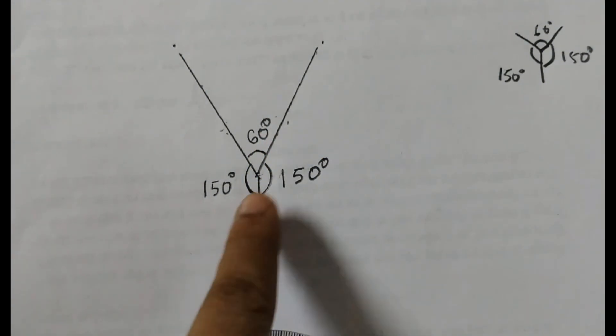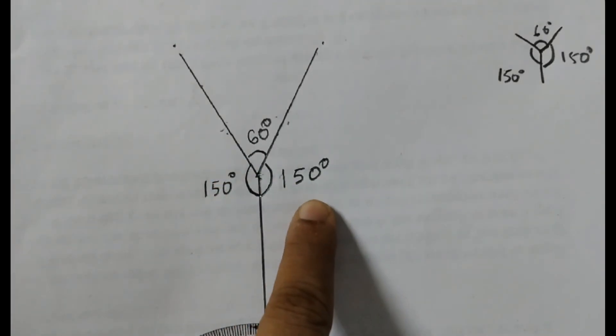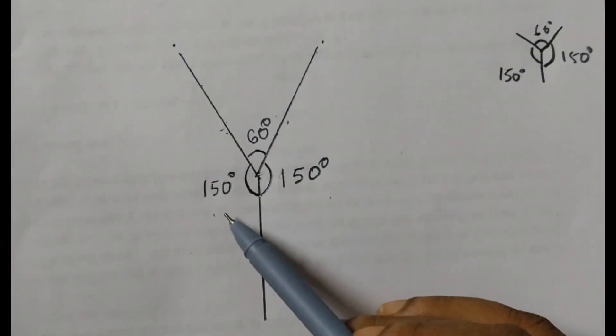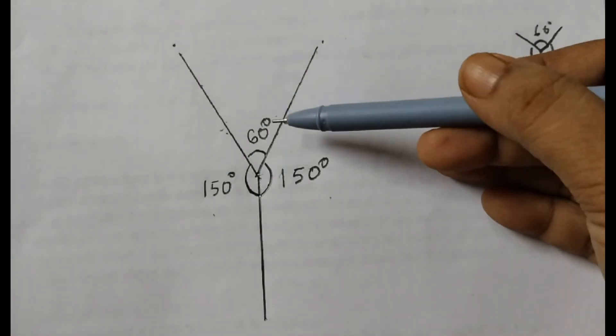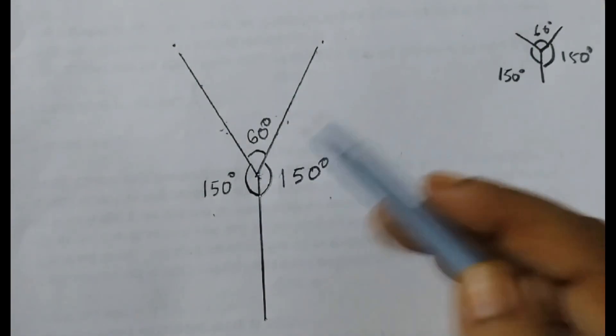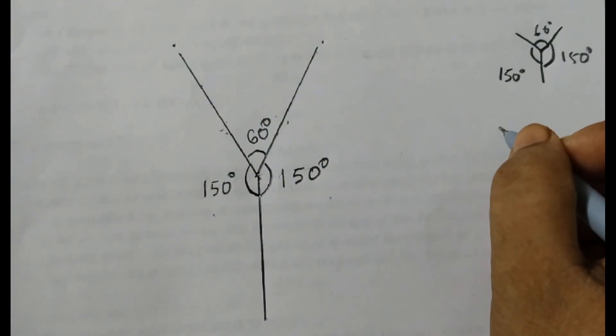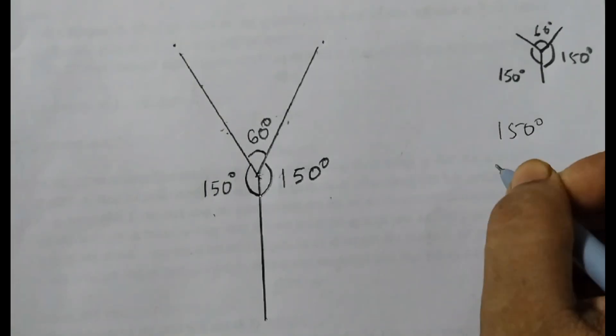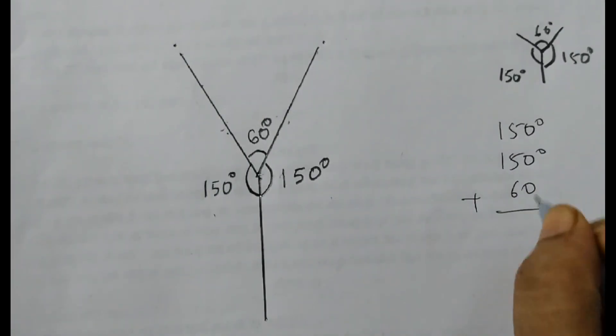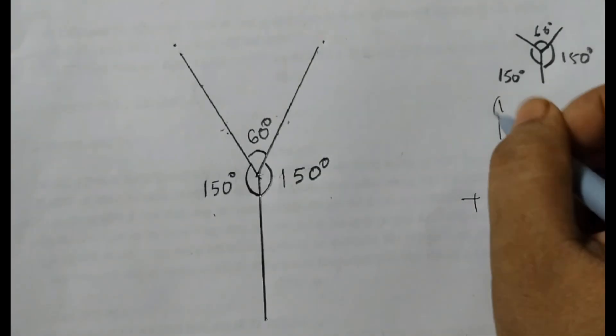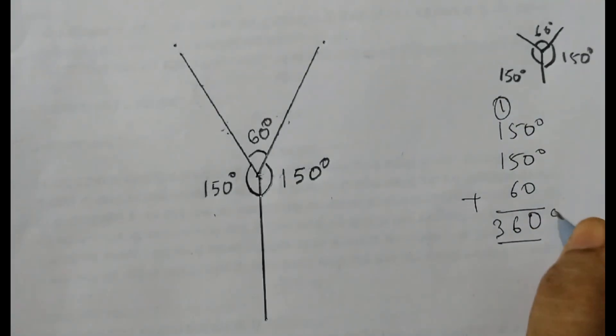So this is 150 degrees, 60 degrees and 150 degrees. You just have to draw 150 degrees and 150 degrees. These two angles you just make and this would be automatically made. The reason for this is when you add all three numbers, when you add all three degrees, 150 degrees, 150 degrees and 60 degrees, you will see that this makes 10, 6, 360 degrees.